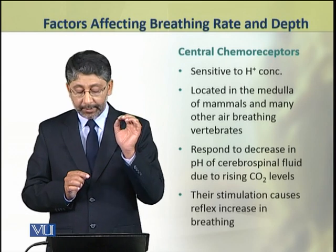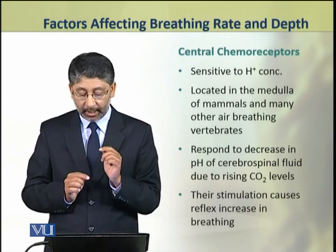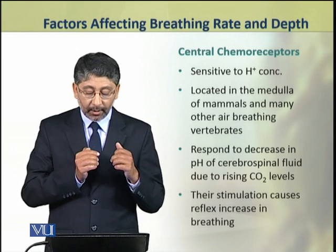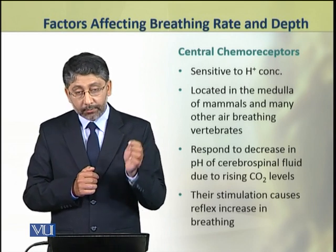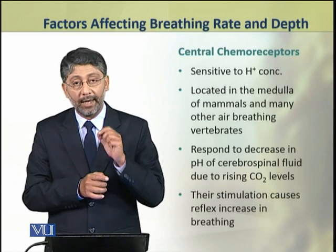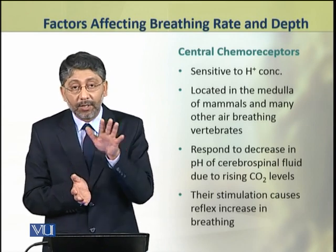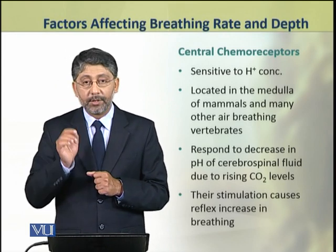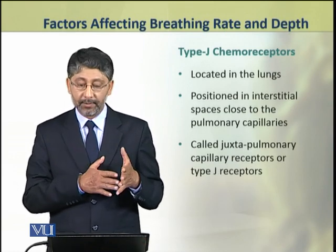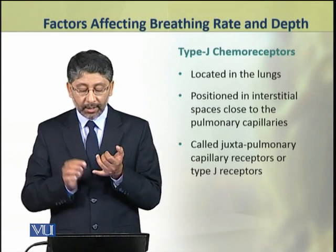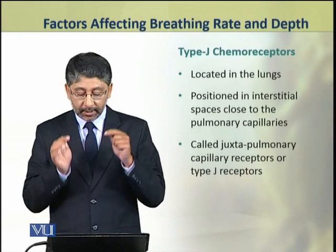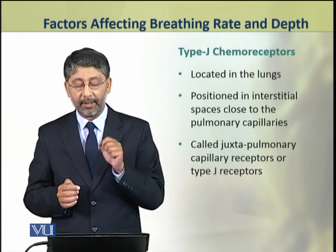These receptors respond to decreasing pH level in the cerebrospinal fluid. Type J chemoreceptors are located in the lungs, in the interstitial spaces near pulmonary capillaries.